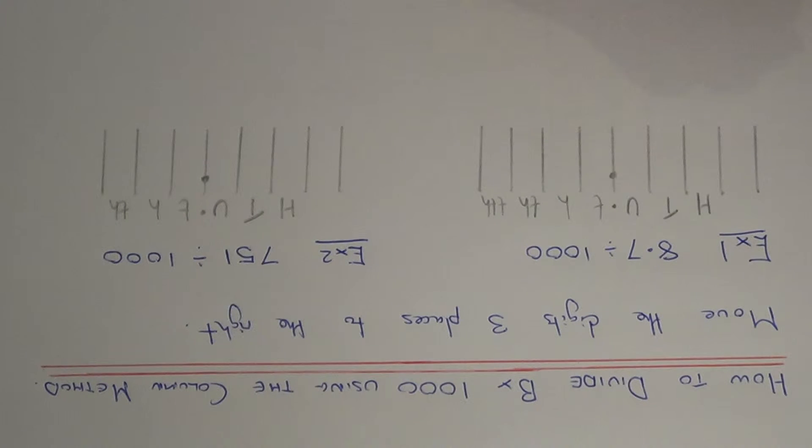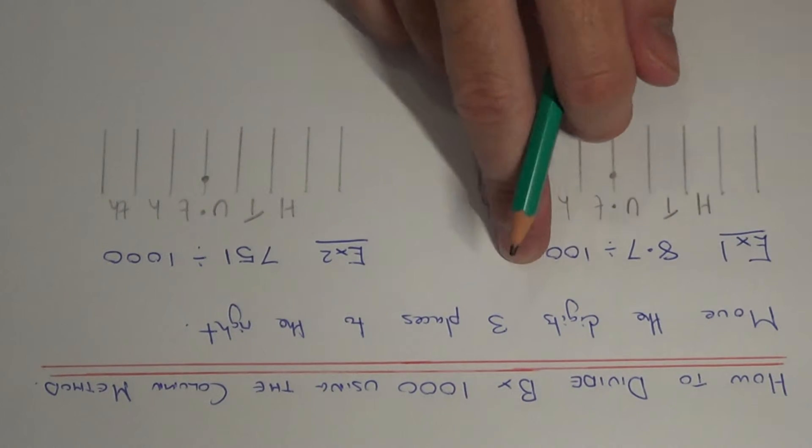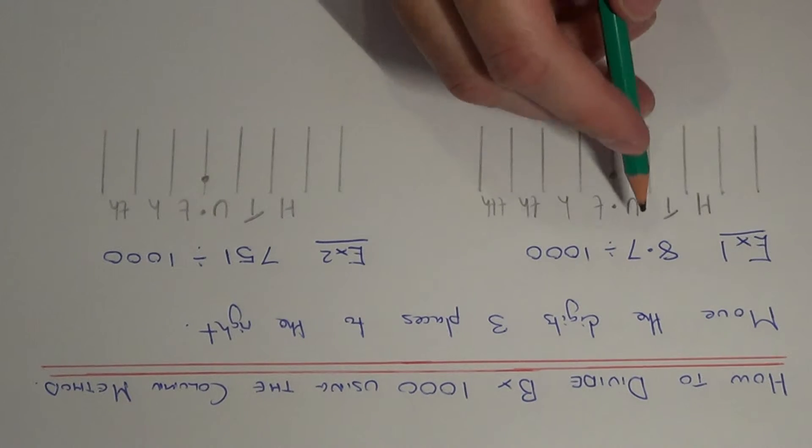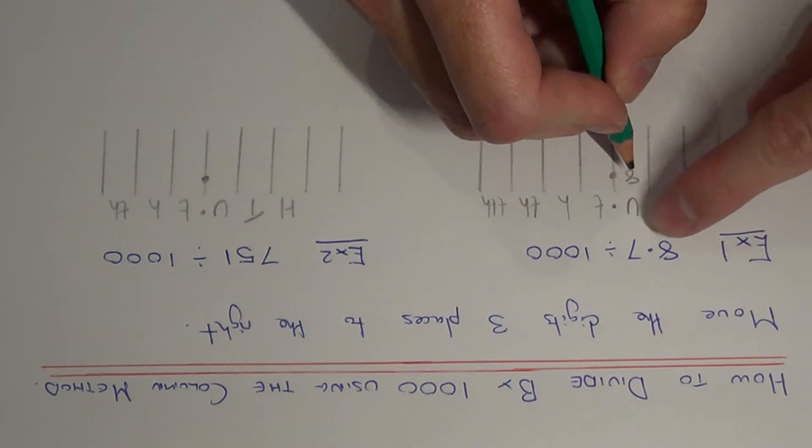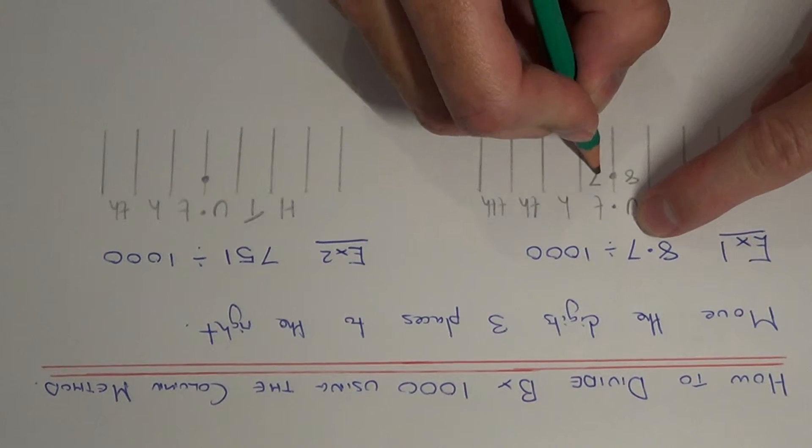This time we need to work out 8.7 divided by a thousand. So first of all write the 8 and the 7 into the correct columns, so we have 8 units and we have 7 tenths.